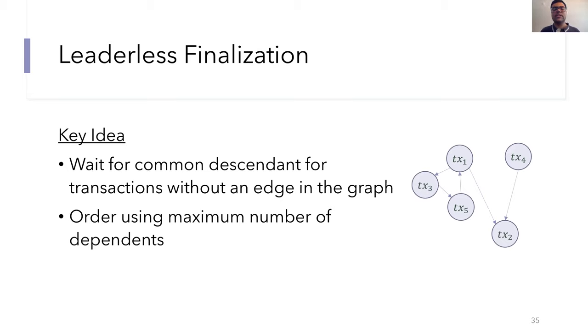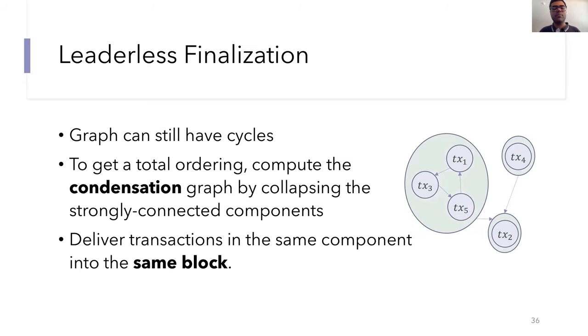So to solve the first problem, the key idea is to wait for a common descendant before ordering transactions that don't have an edge. So now the ordering can be based on the maximum number of descendants for each of the transactions, and in case there's a tie, we can use a predetermined tiebreaker function. The intuitive explanation for why this works is that once a common descendant arrives, any other transaction that arrives later will also be a common descendant. So this means that the difference between the descendants will stay the same henceforth. So this is crucial to maintain consistency. Whenever a node decides to order two transactions, the difference between the number of descendants will be the same as when another node decides to order the same pair of transactions. So this will ensure that all of the nodes take the same ordering decision.